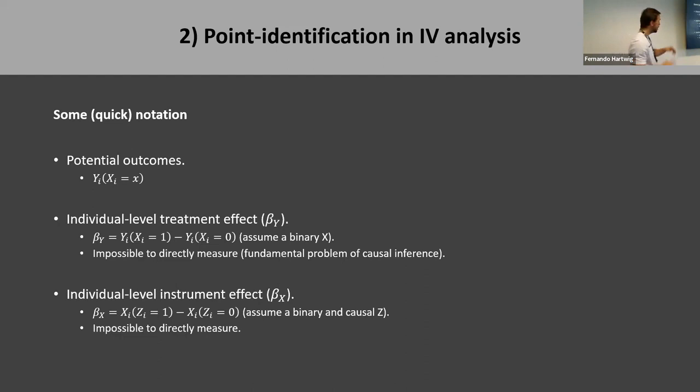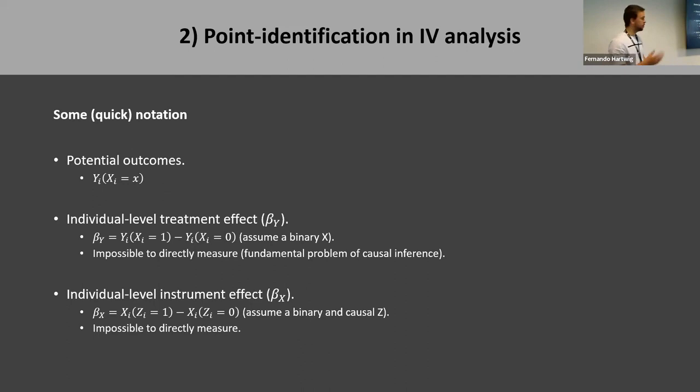It is impossible to measure individual treatment effects directly because we only observe one of the two potential outcomes for a given individual — this is the fundamental problem of causal inference, which is why we always need some form of assumption to do causal inference. Similarly, we can define the individual-level instrument effect beta_x as the effect of Z on X for a given individual. Note that it is not necessary for Z to be a causal instrument, and it doesn't have to be binary — I'm assuming those things just because it's easier to present the ideas.